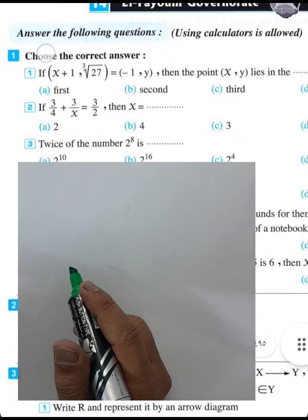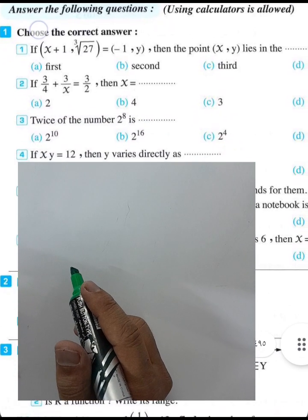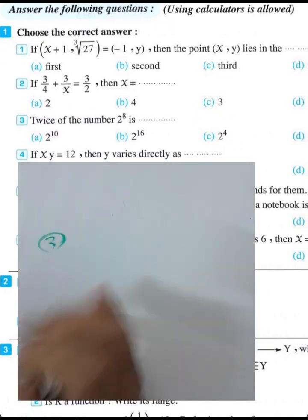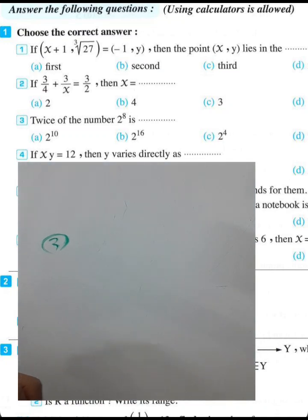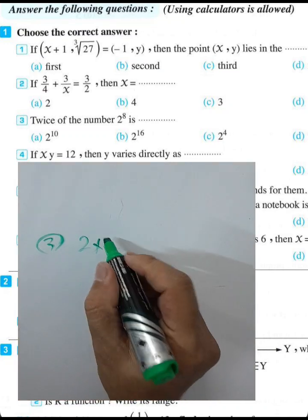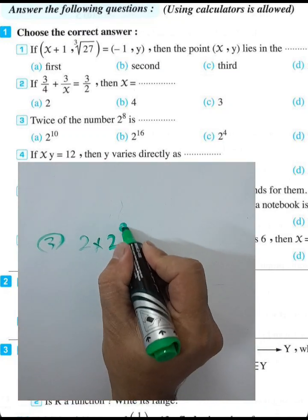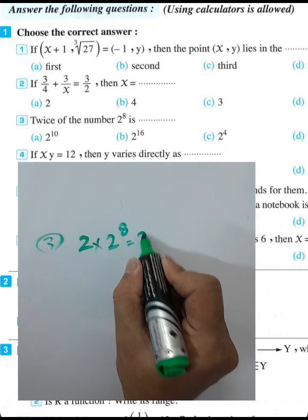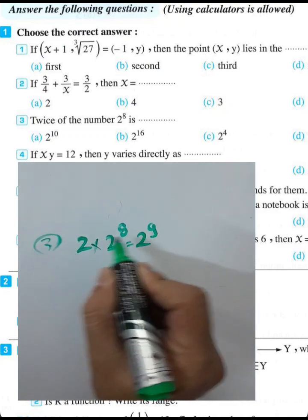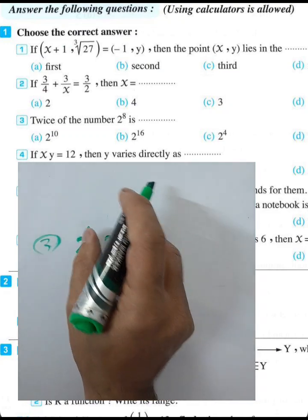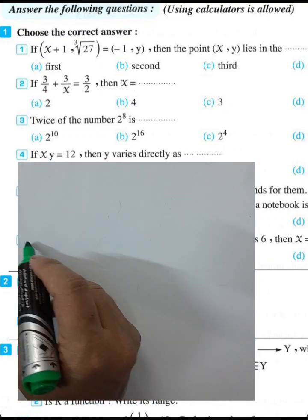Question 3: Twice the number 2 to the power 8. Two times 2^8 equals 2^9, because we add the exponents: 2^8 times 2^1 equals 2^(8+1) = 2^9.